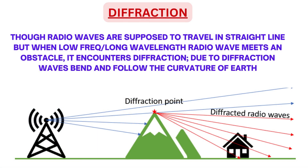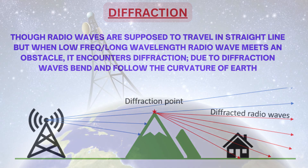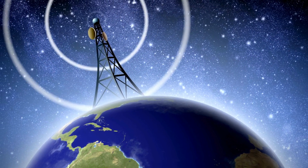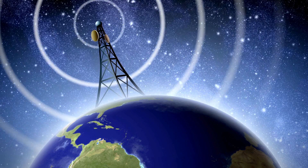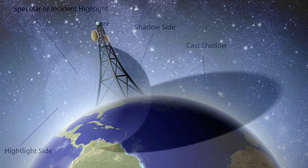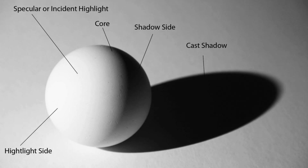Diffraction. Though radio waves are supposed to travel in a straight line, when low frequency or long wavelength radio waves meet an obstacle, they encounter diffraction. Due to diffraction, waves bend and follow the curvature of the earth. A VLF signal can even go around the entire earth. To understand what causes this bending in waves, we will look at an example.